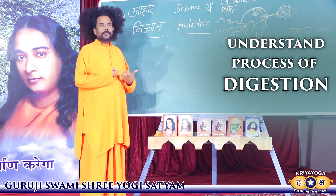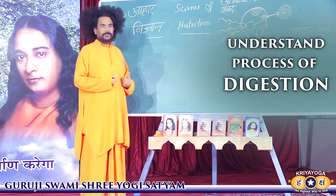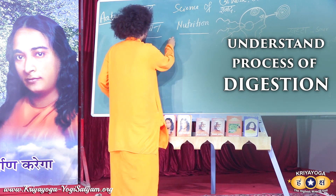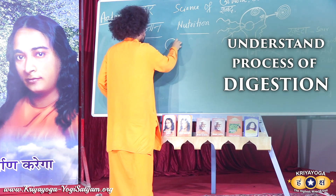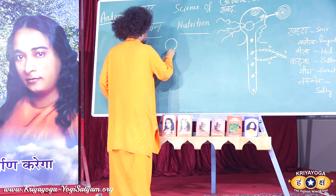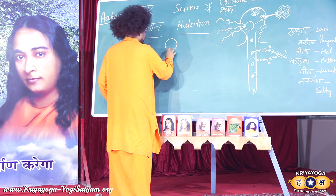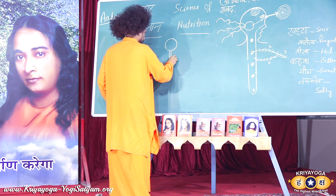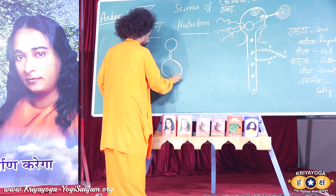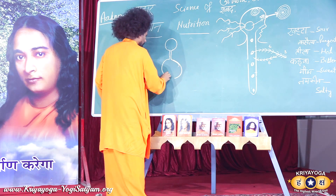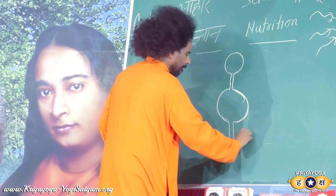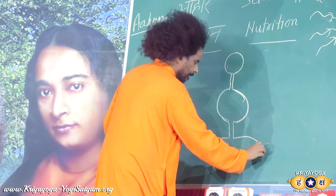Now I'm going to explain the process of digestion. We have three phases of digestion. One is the mouth. Then food enters into the stomach — this is the food pipe, the esophagus. This is the stomach. Then food enters into the small intestine for digestion. This is the small intestine.